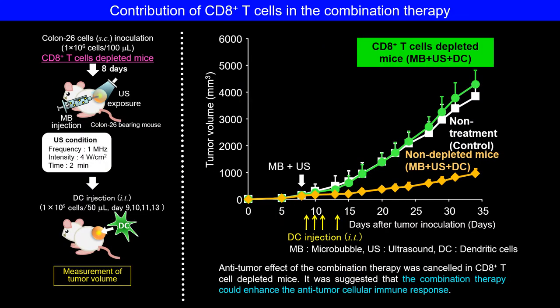In the next experiment, we assessed the contribution of cellular immunity in this combination therapy. In CD8-positive T-cell depleted mice, the anti-tumor effect was completely cancelled. Therefore, it was suggested that CD8-positive T cells were the main effector cells in this combination therapy.